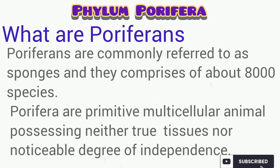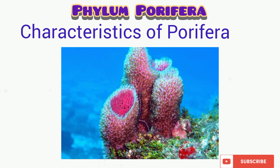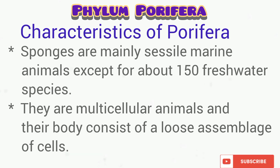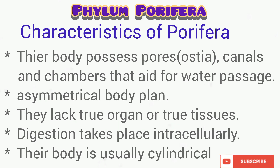Most sponges are marine except for a few freshwater species. As you can see the beautiful sponges being displayed. They are multicellular and their body consists of a loose assemblage of cells — cells that are loosely joined together. They possess what we call the ostia, through which water enters into their body, and oscula, through which water leaves their body.